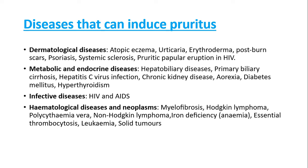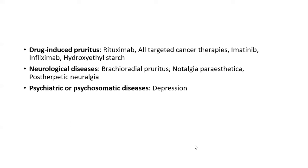Hematological diseases and neoplasms — myelofibrosis, Hodgkin lymphoma, non-Hodgkin lymphoma, polycythemia vera, iron deficiency anemia, essential thrombocytosis, leukemia and solid tumors — can all cause pruritus. Drugs that cause pruritus include rituximab, all targeted cancer therapies, imatinib, infliximab and hydroxyethyl starch. Neurological diseases like brachioradial pruritus, notalgia paresthetica and post-herpetic neuralgia, and psychiatric or psychosomatic diseases like depression are also causes.